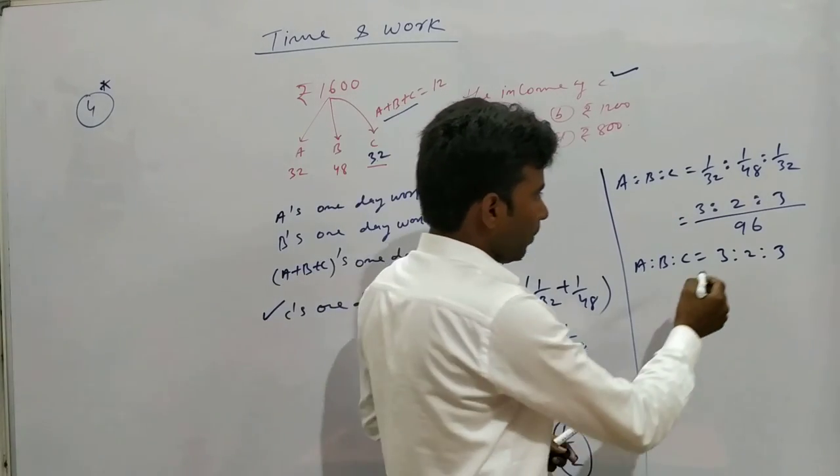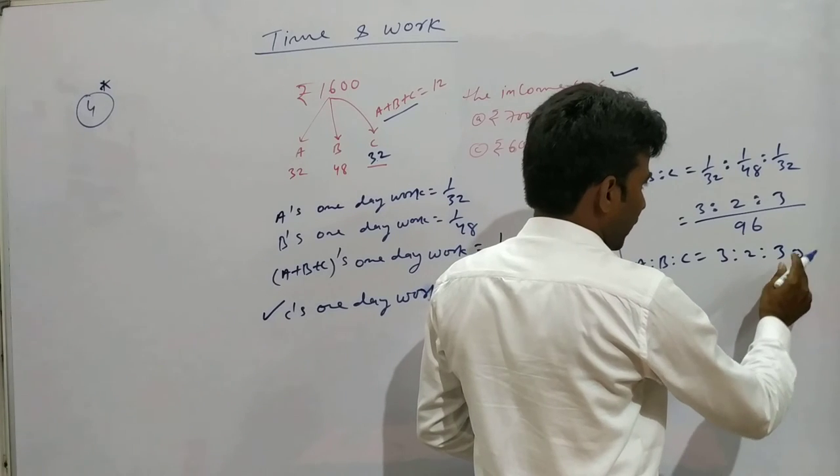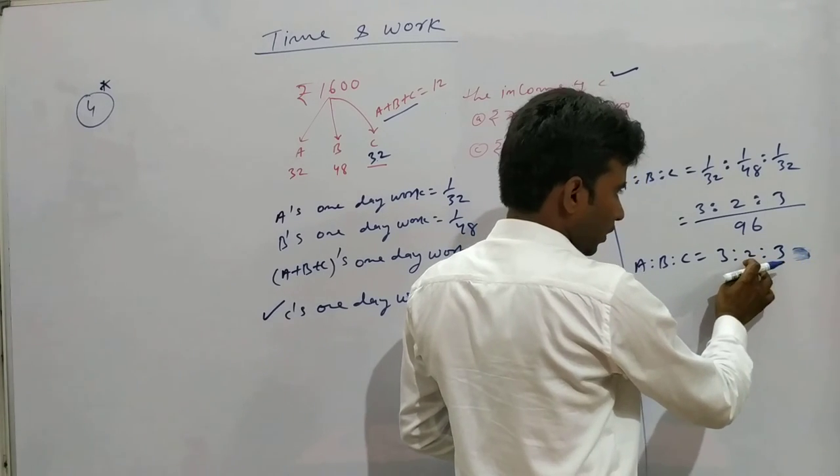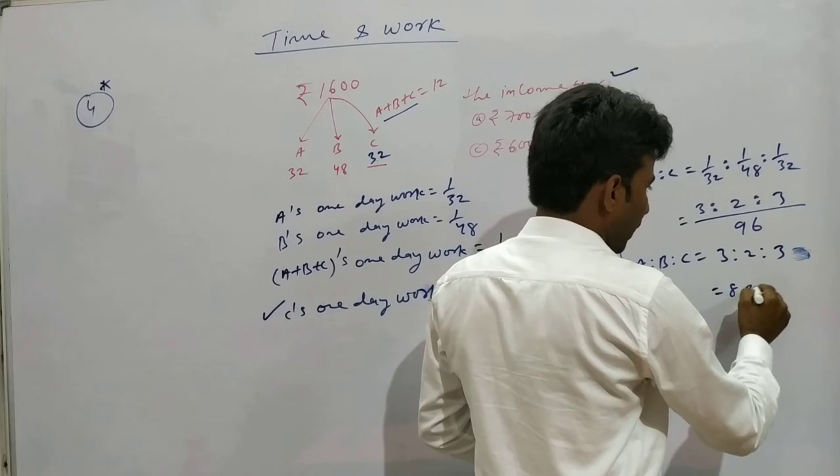Total parts are 3 plus 2 plus 3 equals 8 parts.